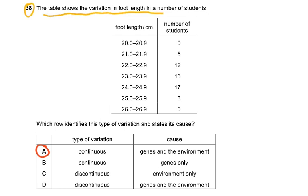Question 38: the table shows variation in foot length and number of students — foot lengths from 20 to 26 cm with student counts of 0, 5, 12, 15, 17, 8, and none. Which row identifies this type of variation and states its cause? The type of variation was continuous, caused by both genes and the environment. In continuous variation, both have a say — for example, you may have the gene for tall height but not enough diet, so you may not grow that tall.